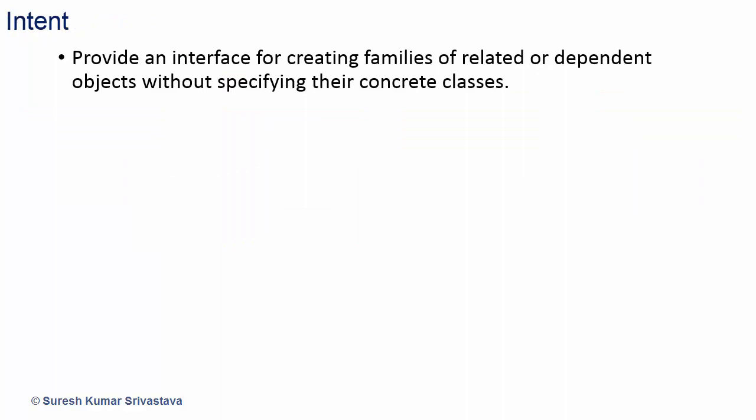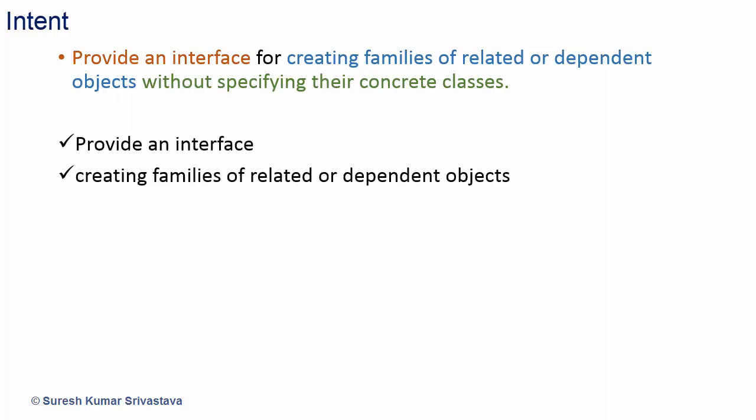Let's see the intent of Abstract Factory Pattern. The intent is: provide an interface for creating families of related or dependent objects without specifying their concrete classes. So we have three key things: provide an interface, create families of related or dependent objects, and do so without specifying their concrete classes.